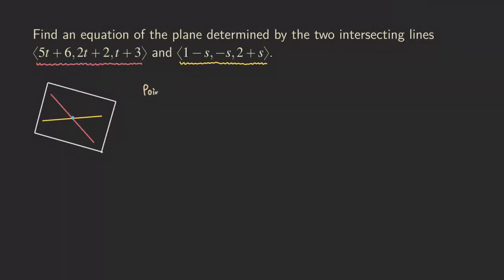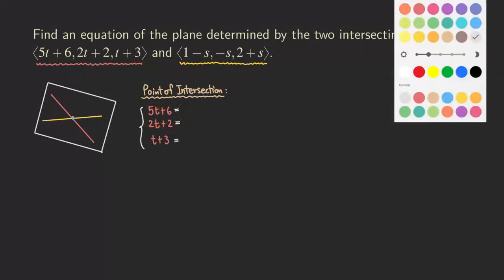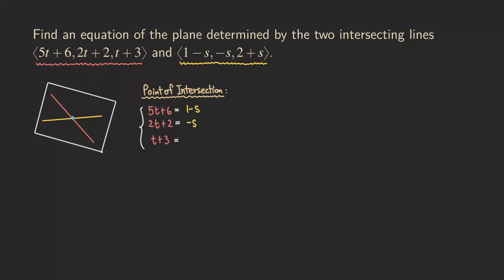To find the point of intersection, we actually need to look at the two lines. What we can do is set the x component of the first line equal to the x component of the second line, and then do the same for the y and z components. What happens is that we are going to get a system of three equations in two unknowns. We have: 5t + 6, 2t + 2, and t + 3 set equal to the corresponding components of the other line: 1 − s, −s, and 2 + s.